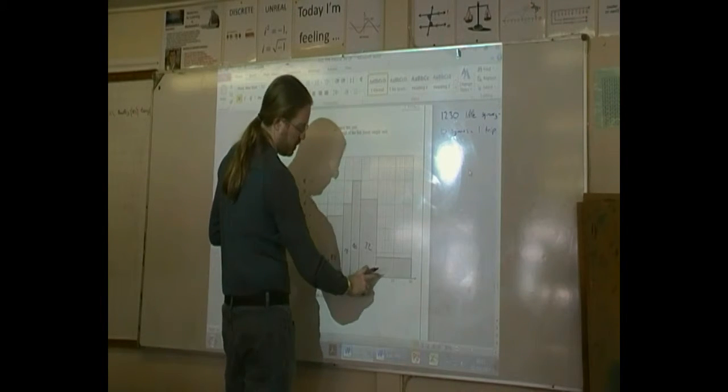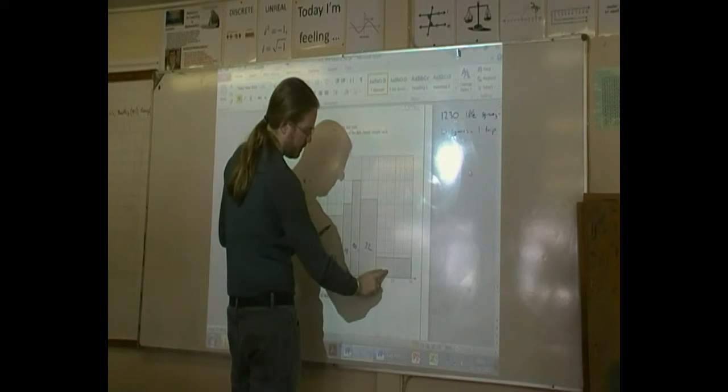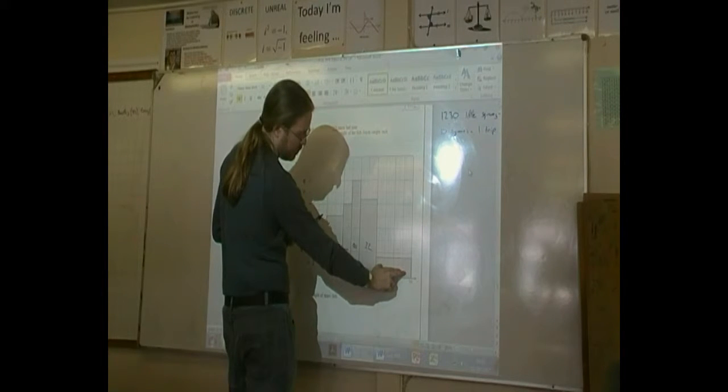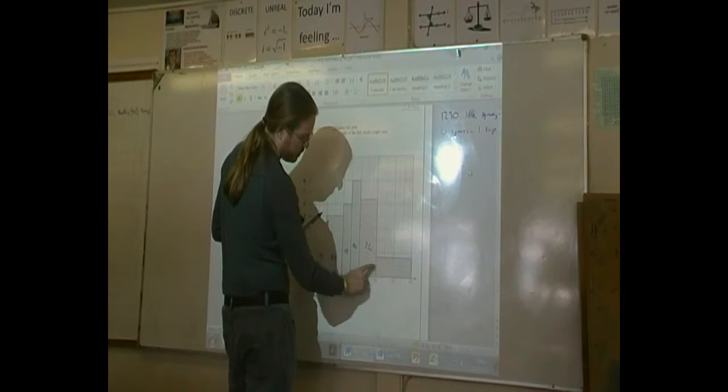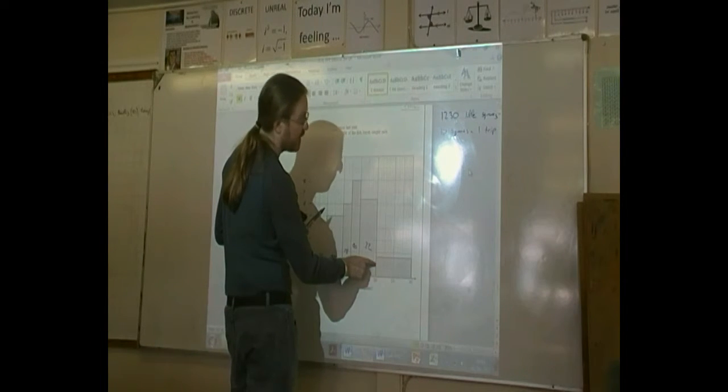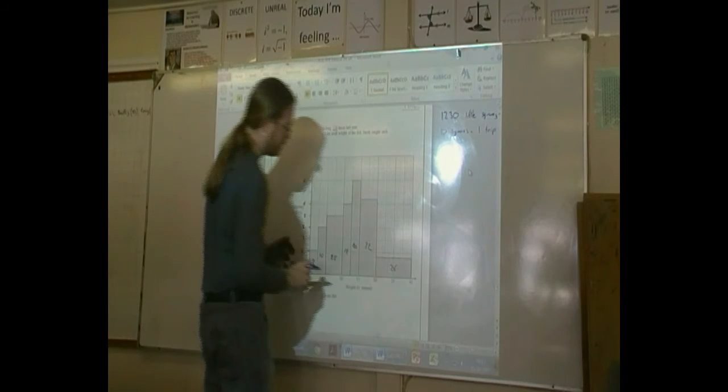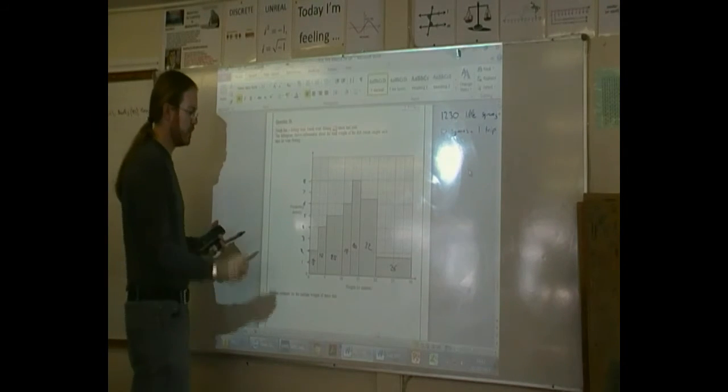And then our last block. So we've got 5, 10. And then we have 20 times 3, 60. So that's about 6. So 16. You can double check that adds up to make the 123.